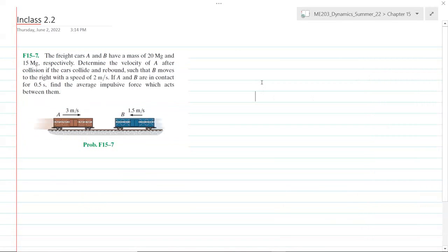This is chapter 15, exercise 2, problem number 2, which is fundamental problem 15-7. In this problem we will apply the conservation of momentum equation, which is Sigma m_i v_i1 equals Sigma m_i v_i2. That means the total momentum remains constant.